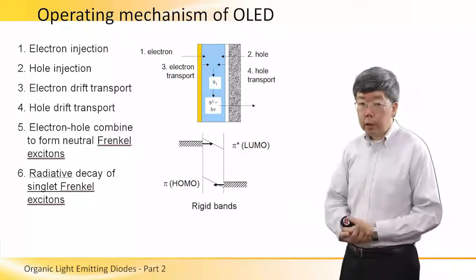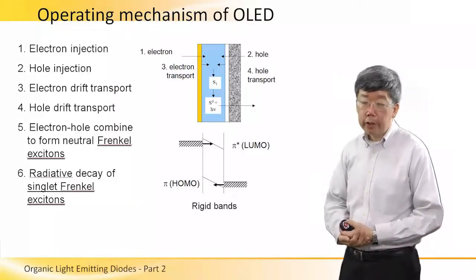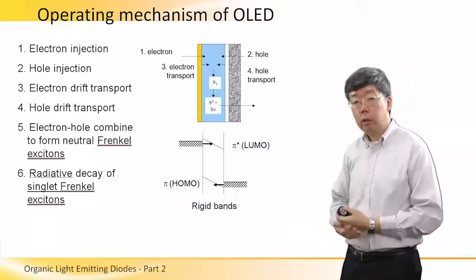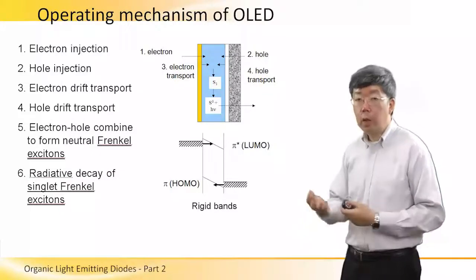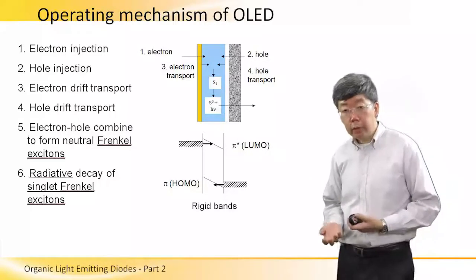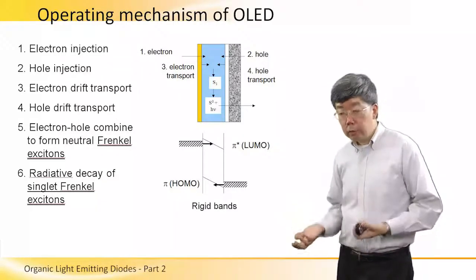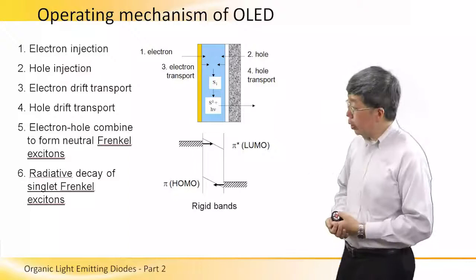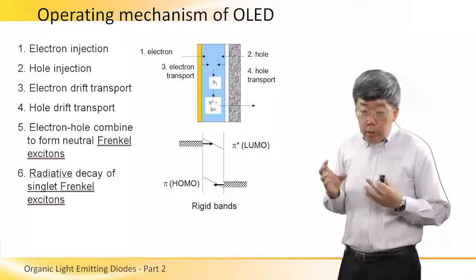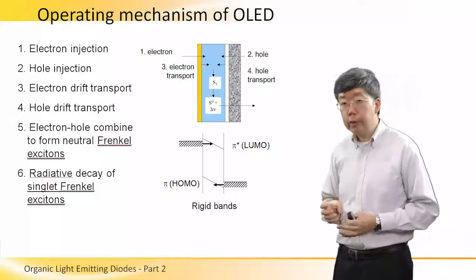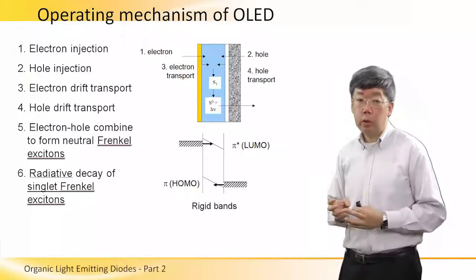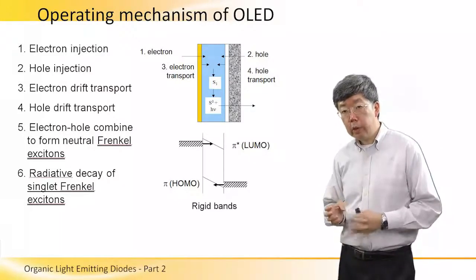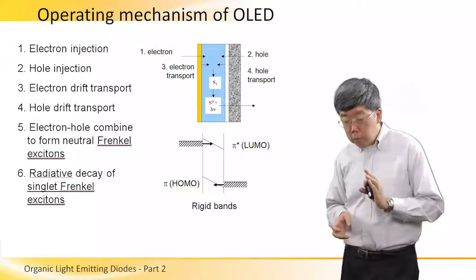Next we explain the operating mechanism of OLEDs — that means how can we obtain photon emission or light when the OLED device is biased by a voltage source or a current source. The first thing to understand is that inside this organic layer, there are typically very, very few charge carriers. That is because these organic materials in an OLED are not doped.